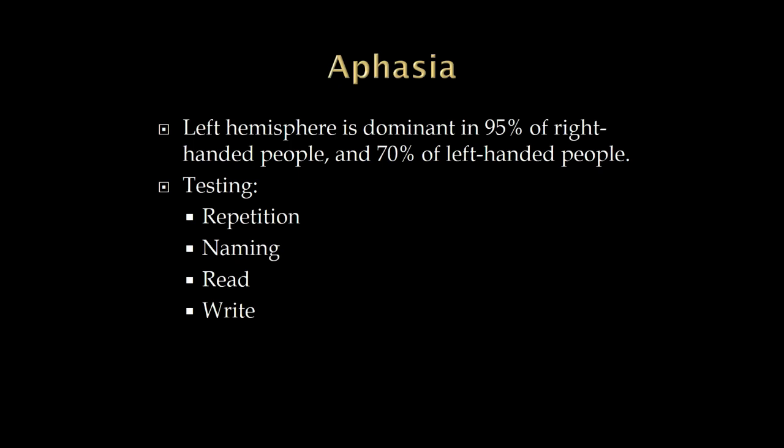Another very helpful test is naming — just point to things. I like to point to knuckles, because if someone has an aphasia, a word like that which you don't use very often may be hard to think of. I'll point to buttons, or what part of the watch is this, or point to my eyebrow or glasses. Reading and writing is also helpful — we have standard script for patients to read, and then we'll have them write some sentences.